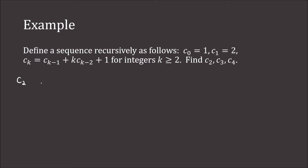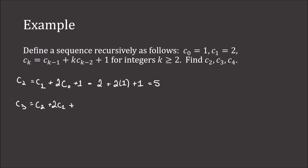For c2, we have c sub 2 minus 1 plus 2 times c sub 2 minus 2 plus 1. Since c0 is 1 and c1 is 2, this is 2 plus 2 times 1 plus 1, so c2 is 5. Now c3 would be c sub 2 plus 3 times c sub 1 plus 1. Since c2 is 5 and c1 is 2, that is 5 plus 6 plus 1, which is 12.